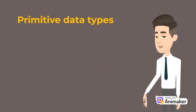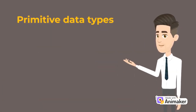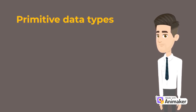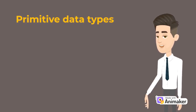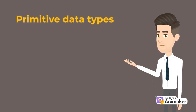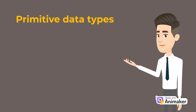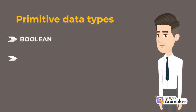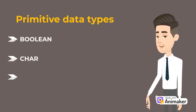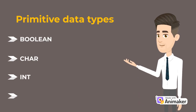In Java language, primitive data types are the building blocks of data manipulation. These are the most basic data types available in Java language and they are divided into four types: boolean, character, integer, and float.